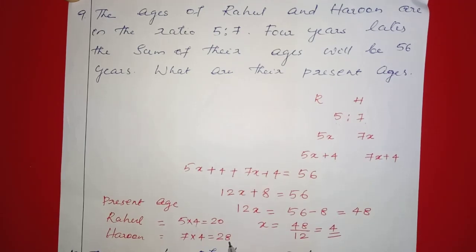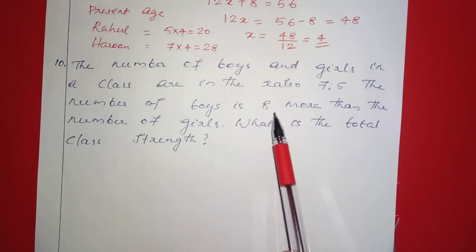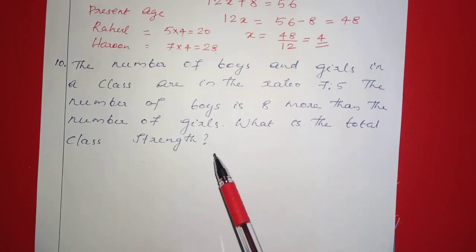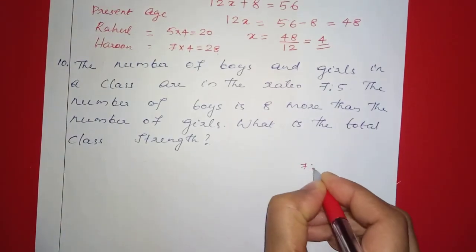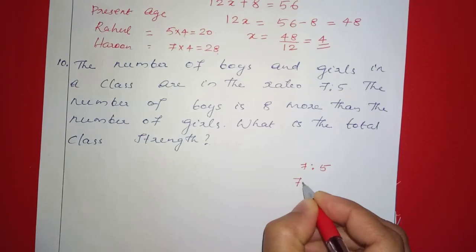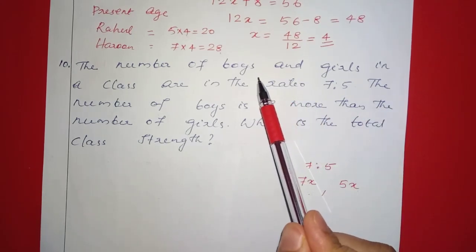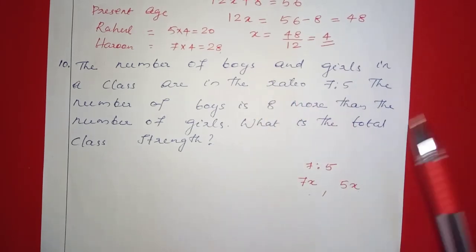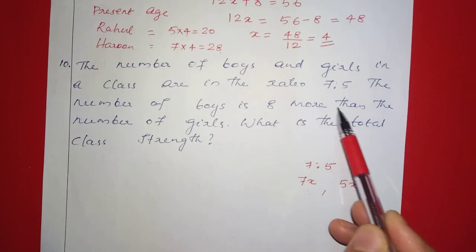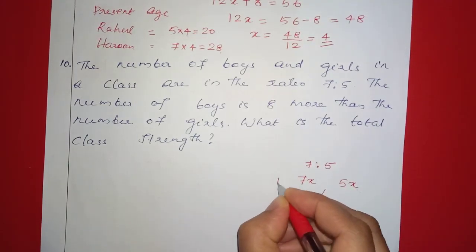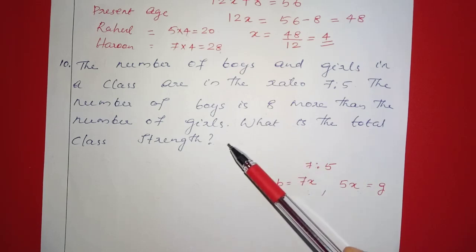Next question: The number of boys and girls in a class are in the ratio 7 is to 5. The number of boys is 8 more than the number of girls. What is the total class strength? Let the number of boys be 7x and the number of girls be 5x. The number of boys is the number of girls plus 8.